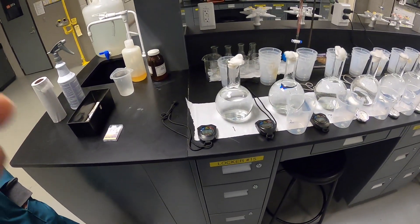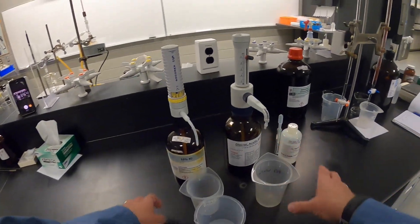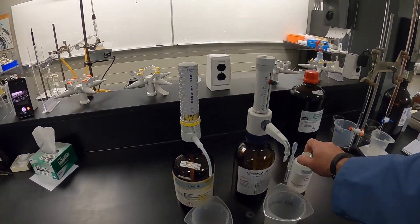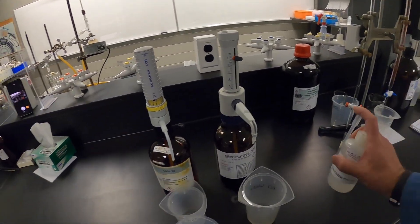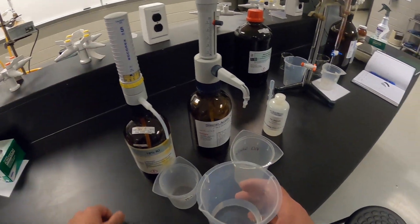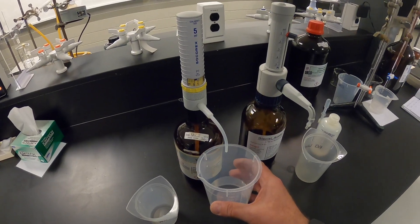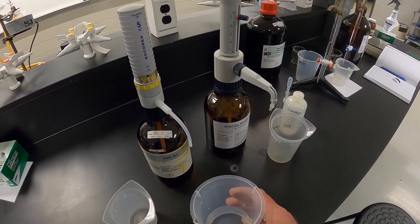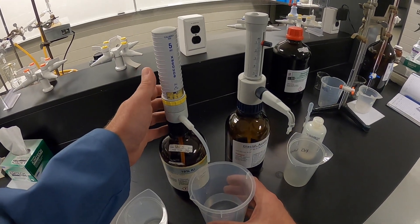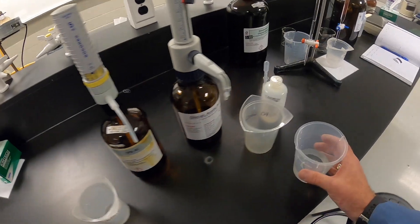These have already been primed: it's one milliliter of potassium iodide, one milliliter of glacial acetic acid, and about two milliliters of the starch solution. That's exactly 30 minutes. Ian adds the starch.